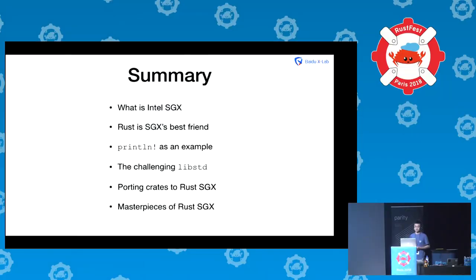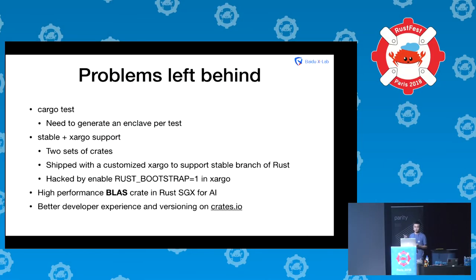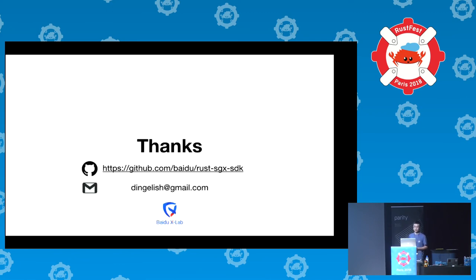In summary, here are some problems still remaining. First, cargo test: SGX has a different system setting so it does not support cargo test. For xargo, it cannot support Rust Stable. For AI users, they need a high-performance BLAS crate, but we don't have one yet. And I need to better manage versioning on crates.io. Thank you, that's all of my talk.